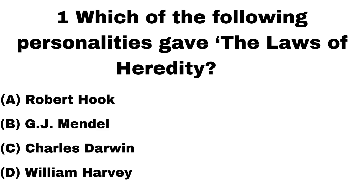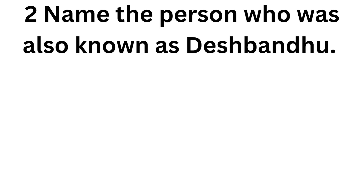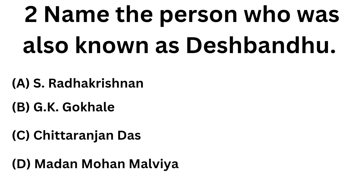Robert Hooke, GJ Mendel, Charles Darwin, William Harvey. The answer is GJ Mendel. The second question: name the person who was also known as the Deshbandhu. Options are: Krishnan Gogali, Chitragupta, Madan Mohan Malviya.